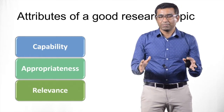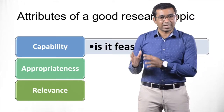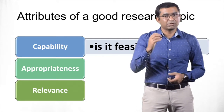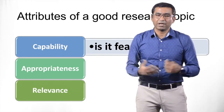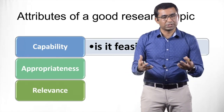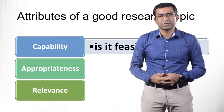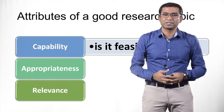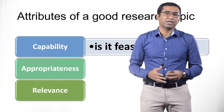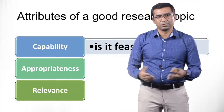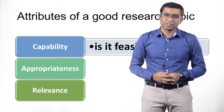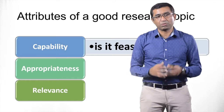These are the three major components through which you can understand whether any topic is important for research or not. The first thing is your capabilities. Do I have enough time? Do I have enough capabilities to handle this research project or topic? Do I have enough resources, enough data analysis techniques, and other related factors related to resources, time, personal capabilities, surroundings, and personal ethics also?